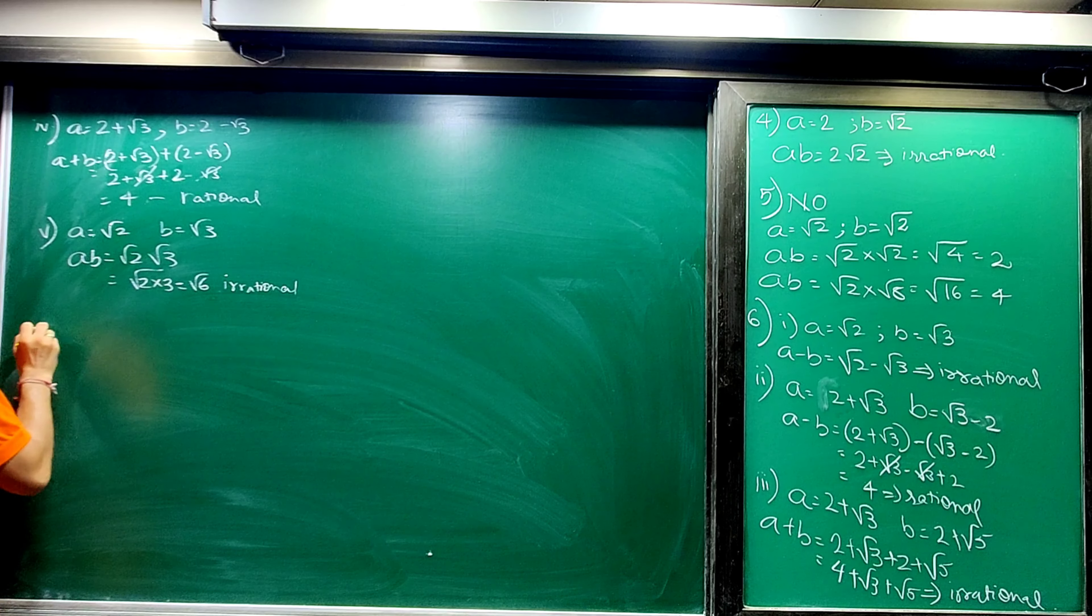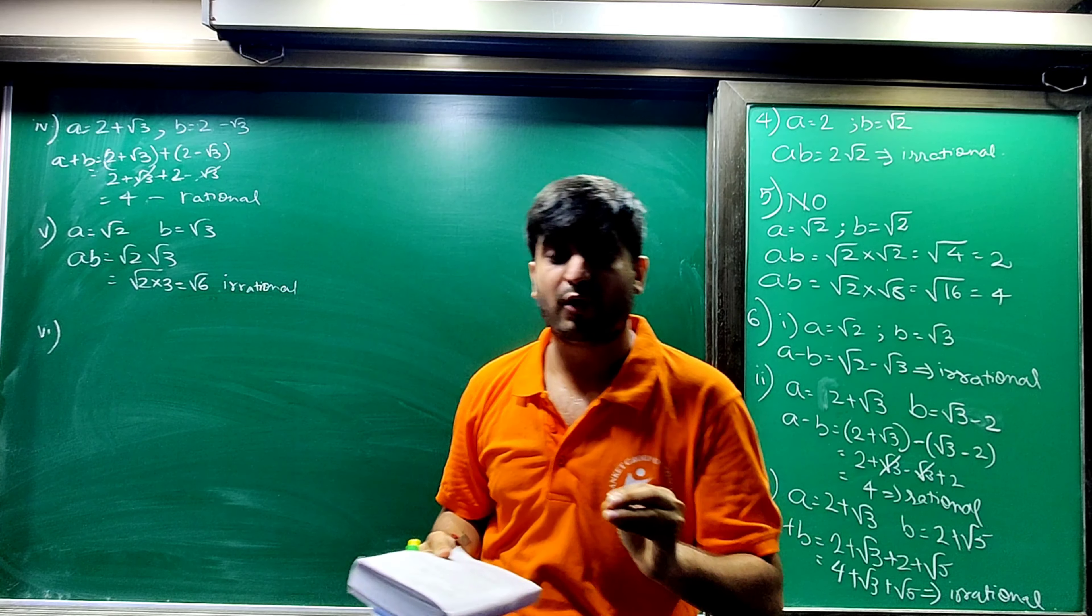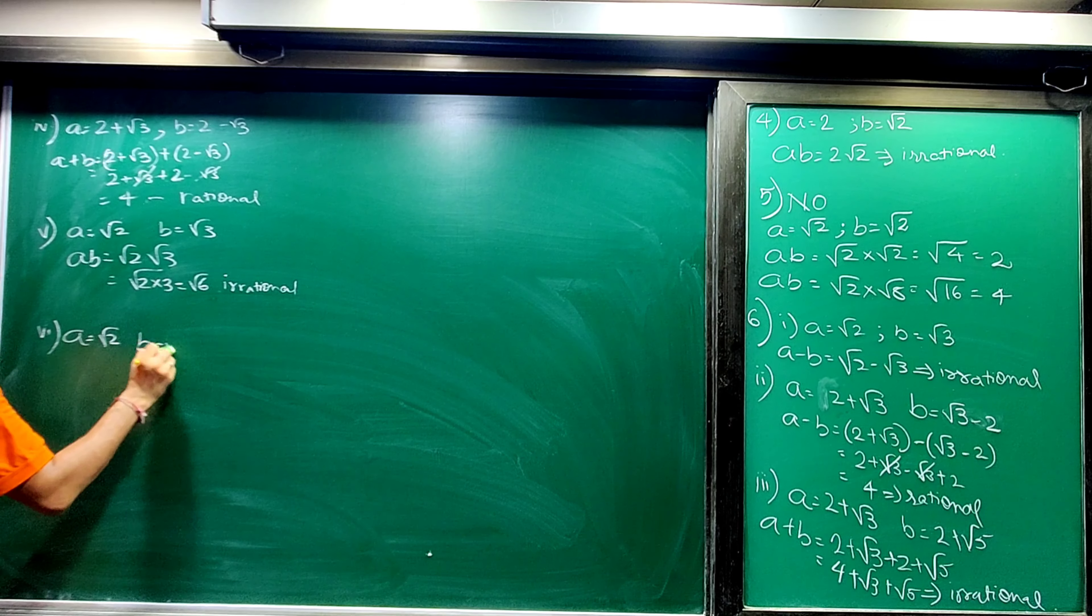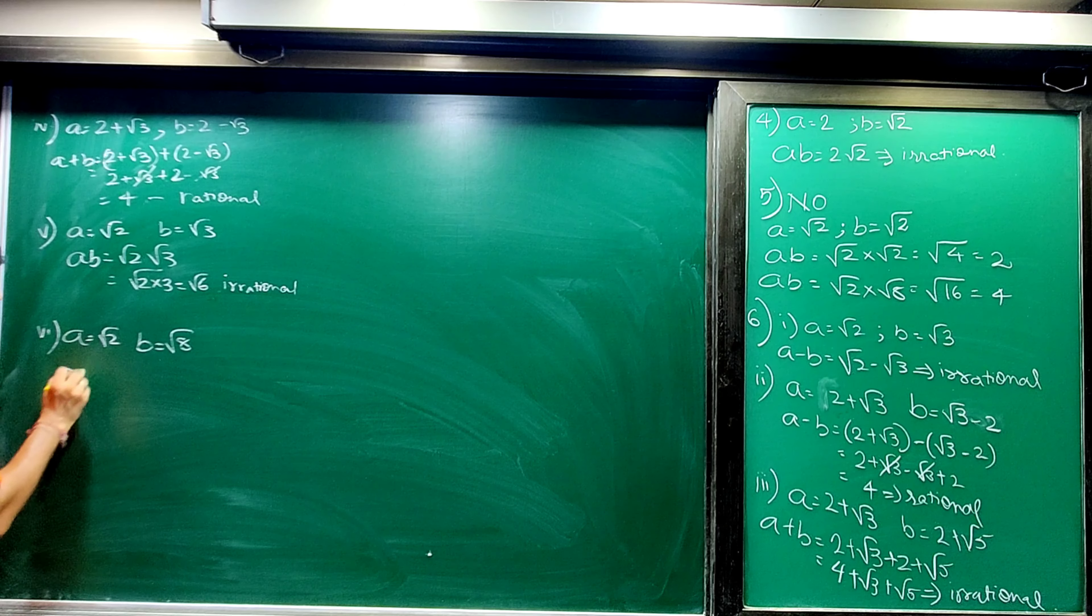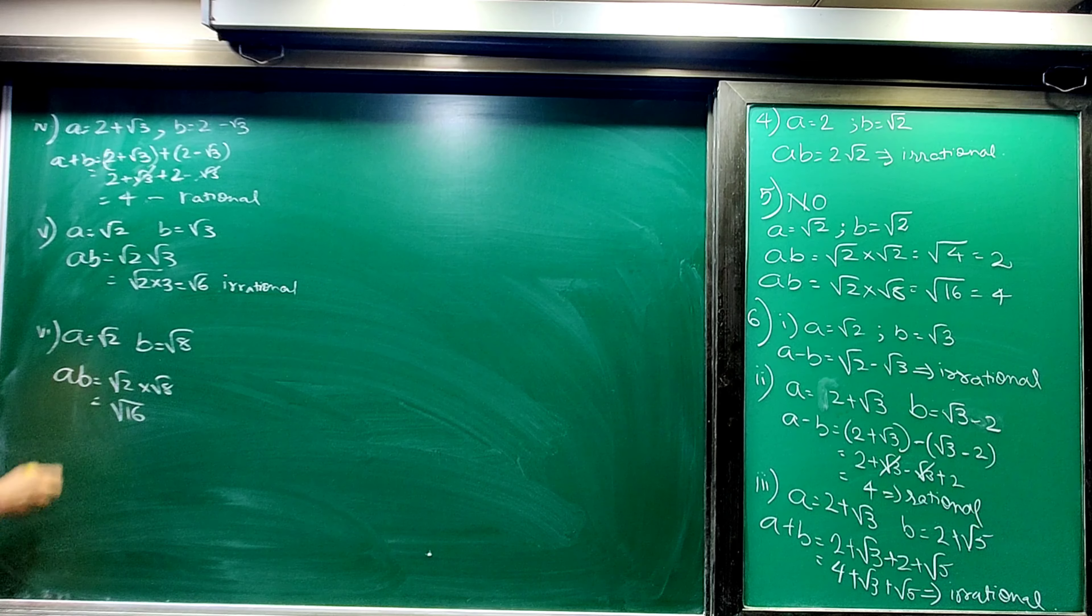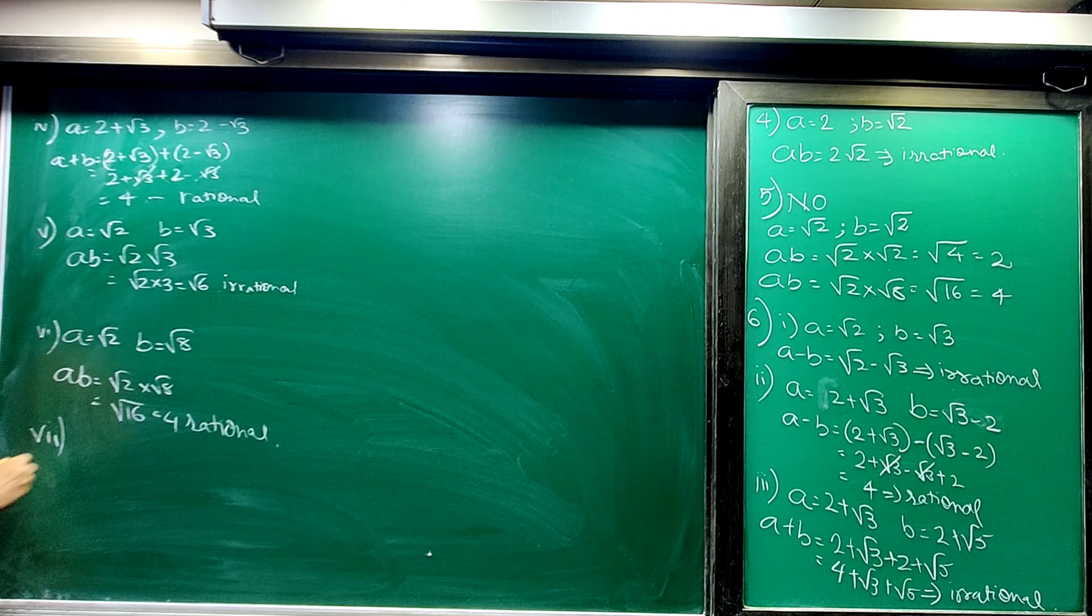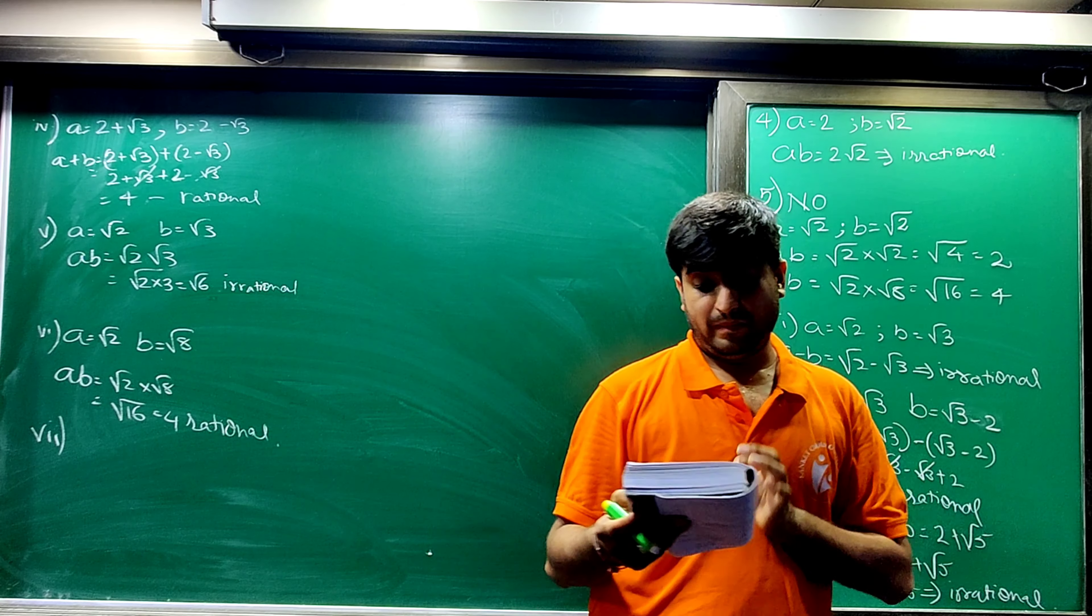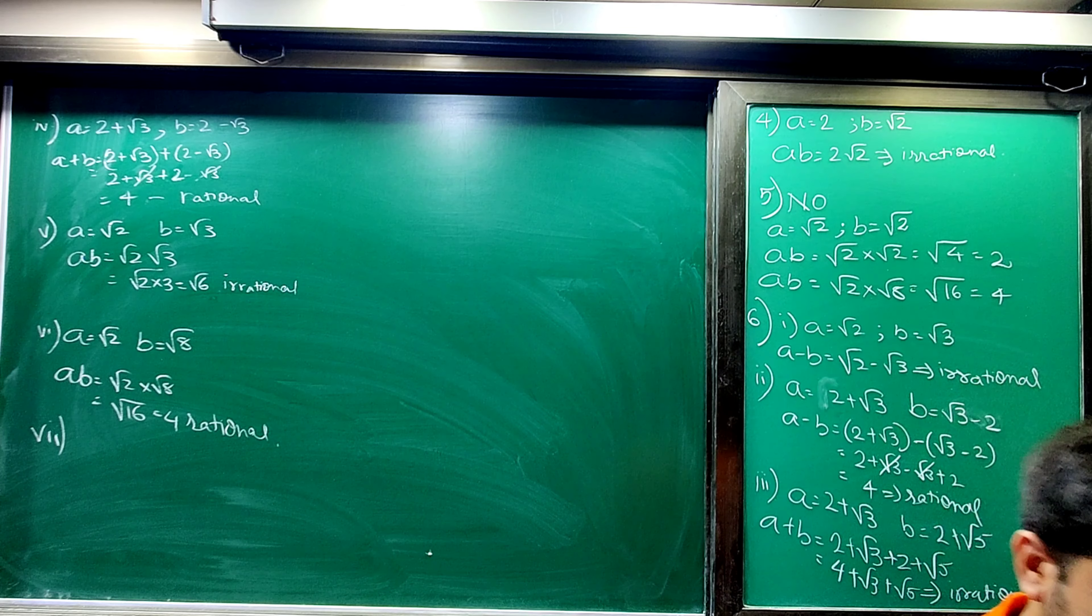Sixth: product is a rational number. Product should be rational. So, for example, I will take a as root 2 and b as root 8. Both are irrational numbers. But when we try to solve product, root 2 into root 8 gives root 16, and root 16 answer is 4. So it is your rational number.